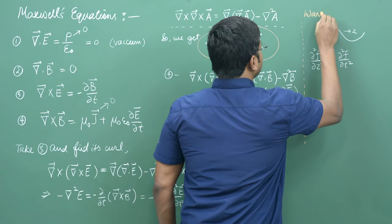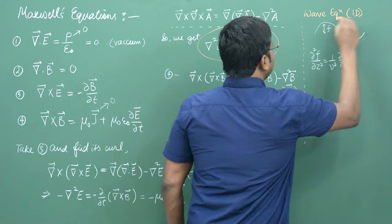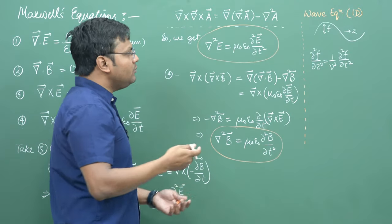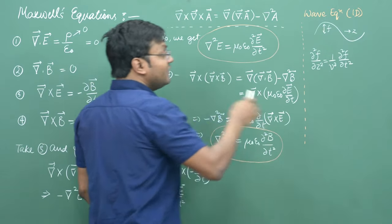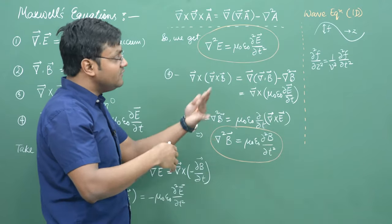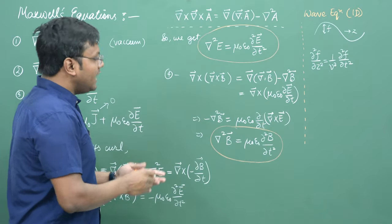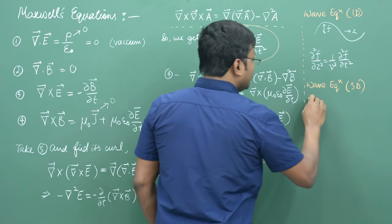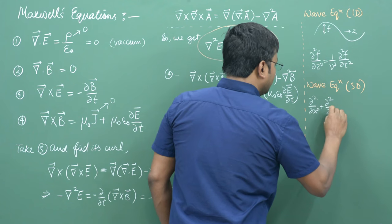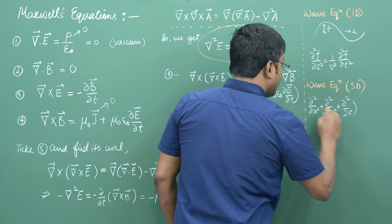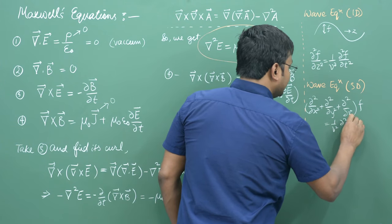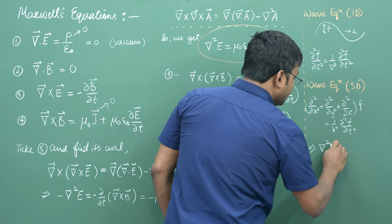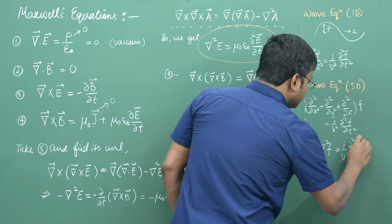If we write down the wave equation for a three-dimensional disturbance propagating in the same fashion, instead of del squared upon del z squared, we'll have del squared upon del x squared plus del squared upon del y squared plus del squared upon del z squared of F, equal to one upon v squared del squared F upon del t squared. This is essentially the Laplacian of F equals one upon v squared del squared F upon del t squared. This is a wave equation in three dimensions.